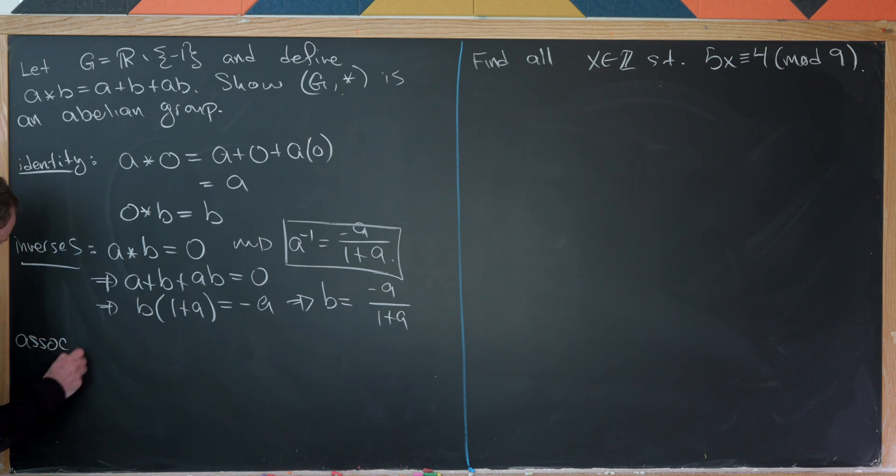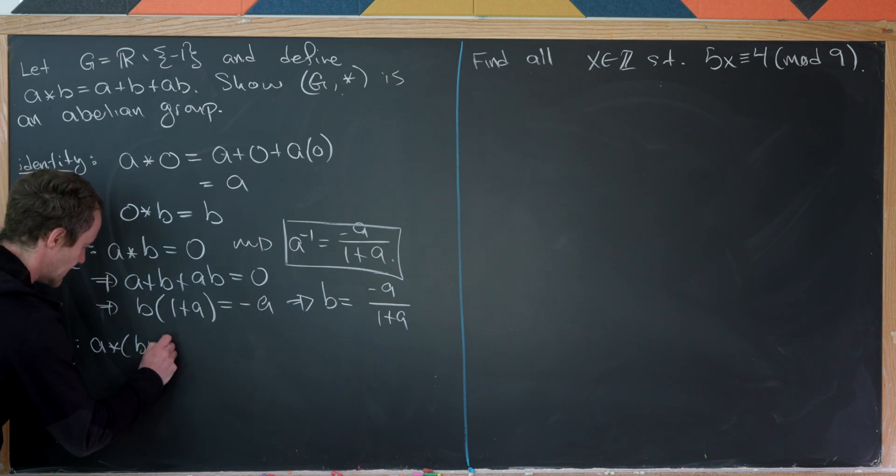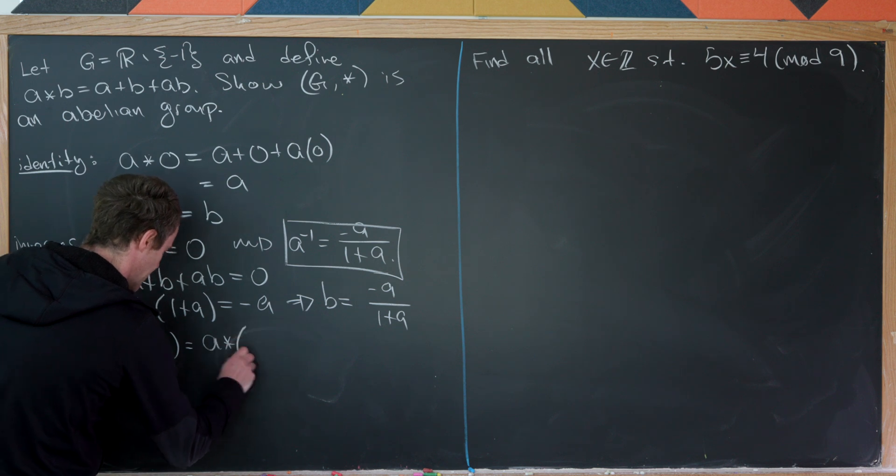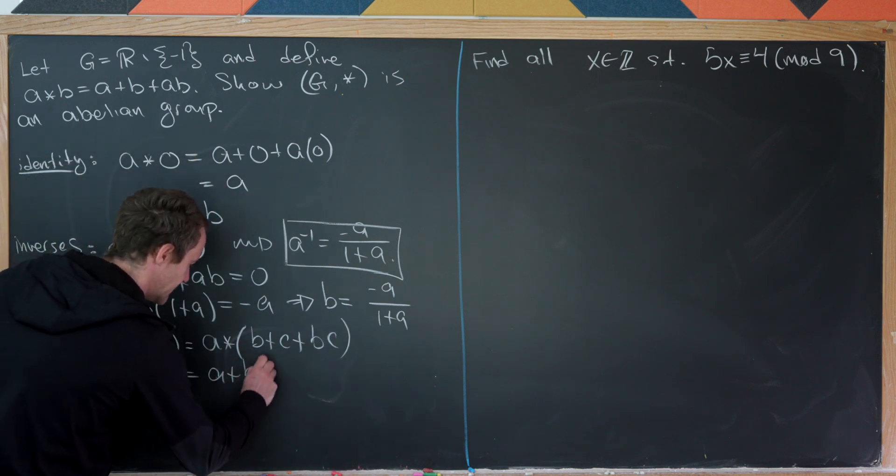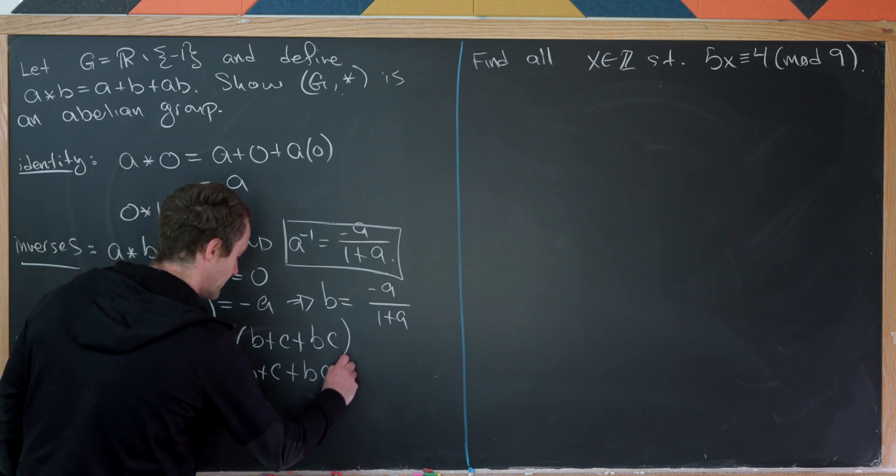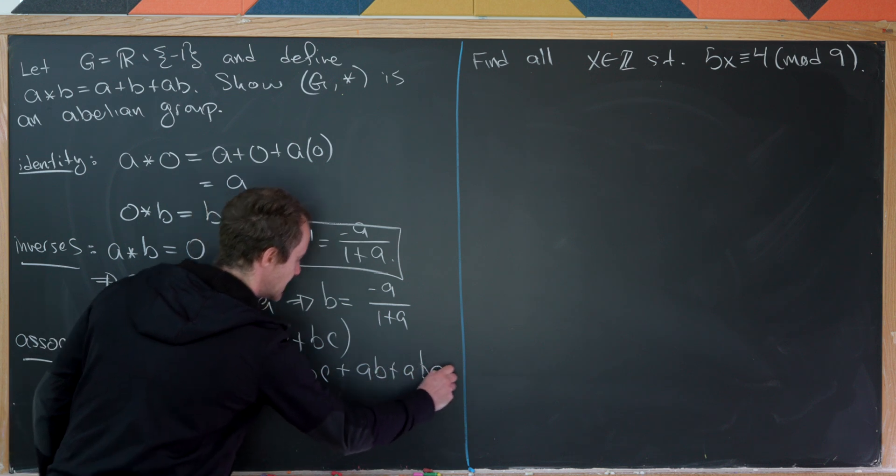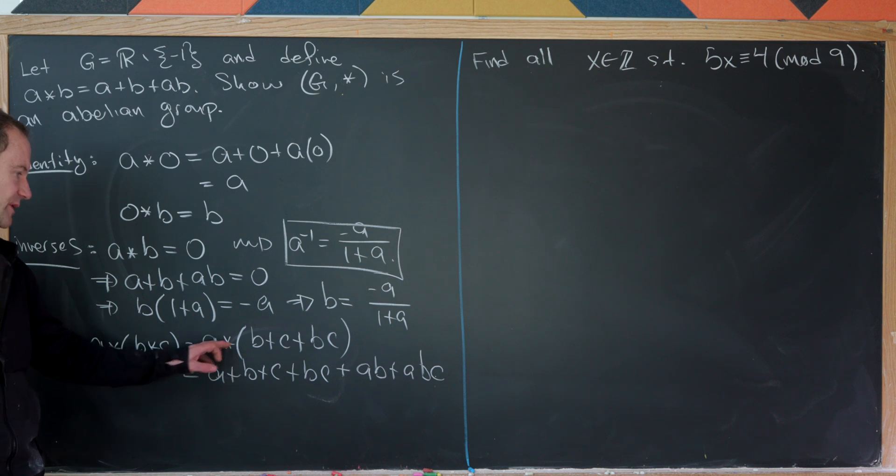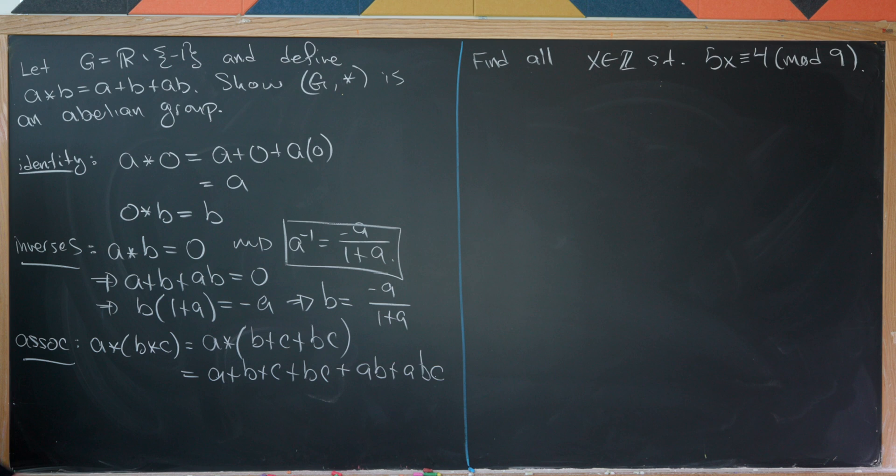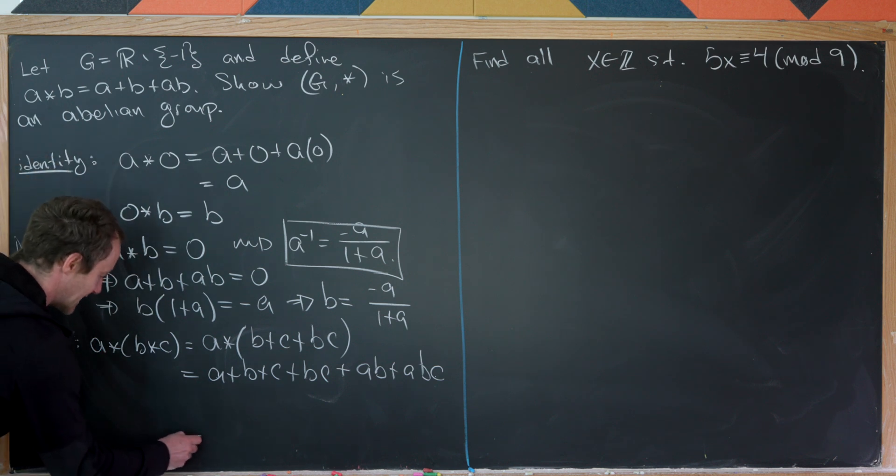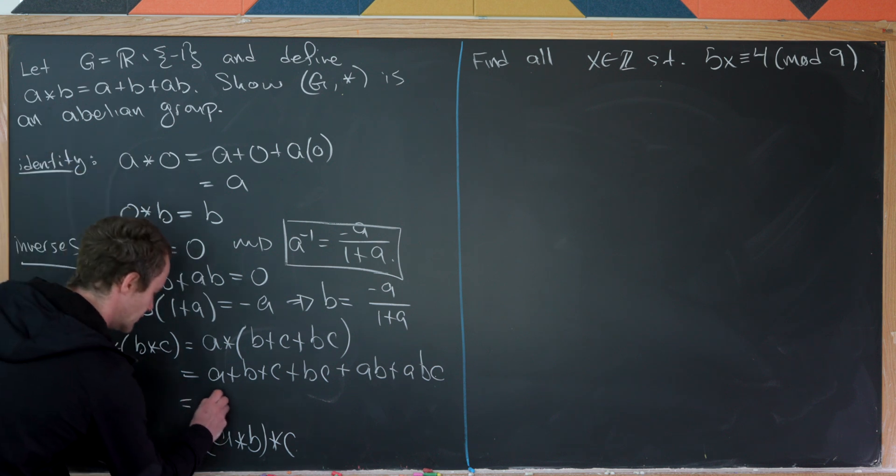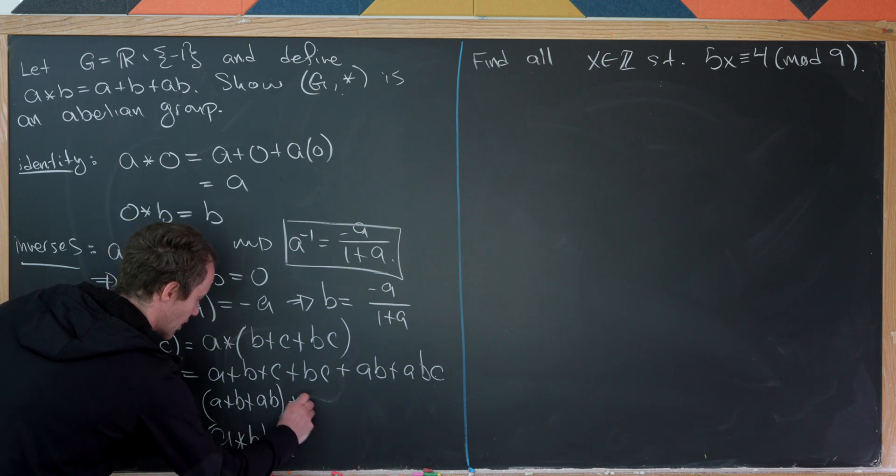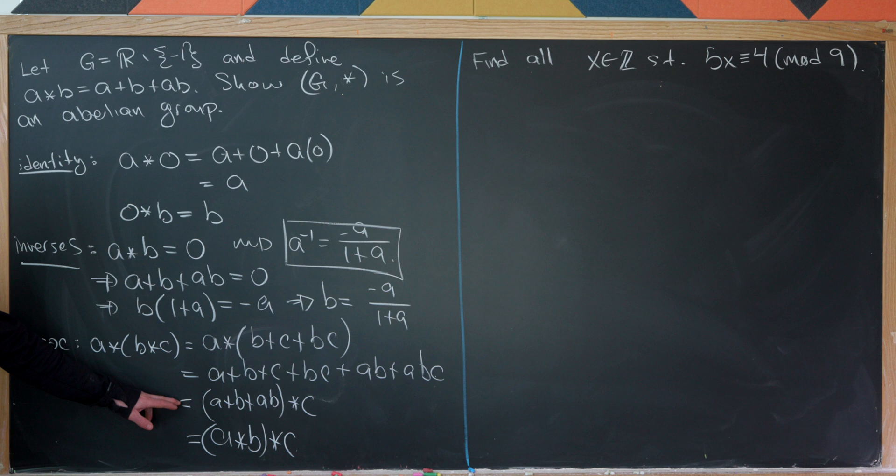Associativity, maybe. So let's look at that. So associativity. Let's look at a star b star c. So that's going to be a star, and then b star c is equal to b plus c plus bc. But then that's going to give us a plus b plus c plus bc plus a times b plus c plus bc, which is a plus b plus c plus bc plus ab plus ac plus abc. So that's just applying the star operation between a and then this object right here. And then now we want to factor that in the opposite order. So we'd like to end down here with a star b star c, which that's equal to a plus b plus ab star c. And then we just have to link from here up to here. But if we were to carefully expand this out, we would get exactly this term right here. So we have associativity.